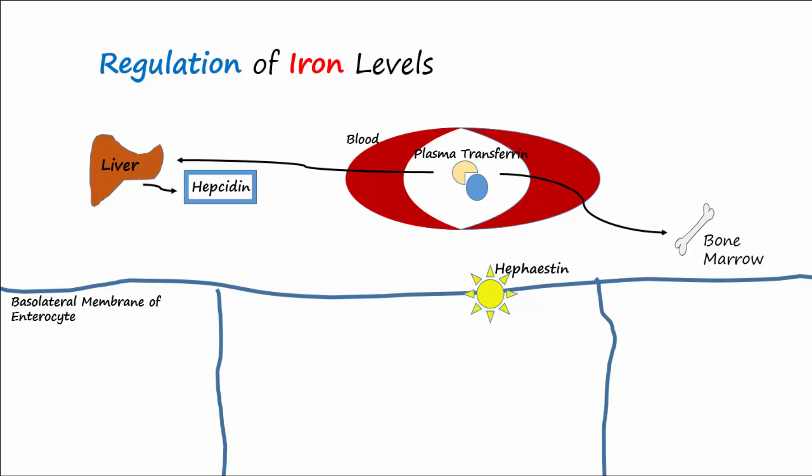Hepcidin also prevents the release of iron into the blood from macrophages in the liver and spleen that are breaking down senescent red blood cells. Both of these actions prevent blood levels of iron from rising.